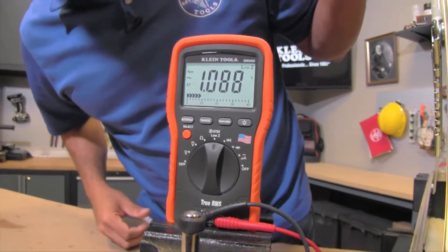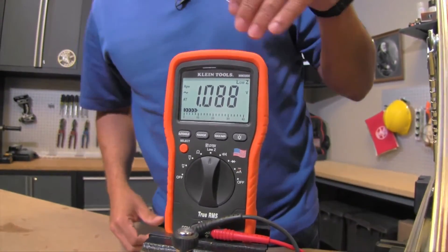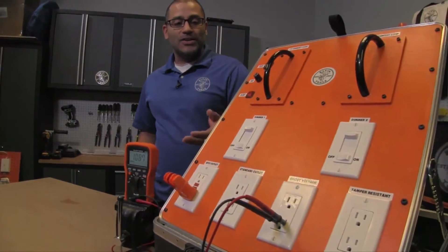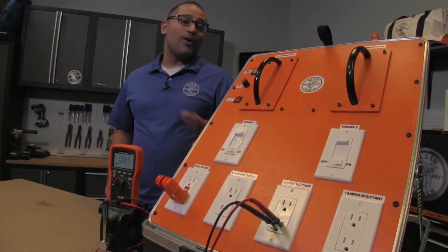And what you'll notice is out of that same outlet that was reading 109 volts you'll realize now it's down to about a volt. So this is a good indication that that outlet is somehow wired wrong or not wired at all.